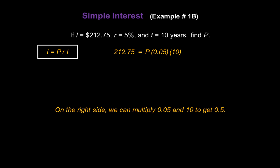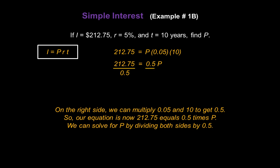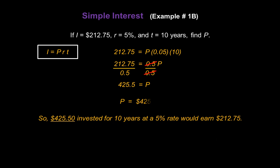On the right side, we can multiply 0.05 and 10 together, which gives us 0.5. So our equation is now 212.75 equals 0.5P. We can solve for P by dividing both sides of our equation by 0.5. On the left, 212.75 divided by 0.5 is 425.5. And on the right, 0.5 divided by 0.5 cancels out, leaving us with just P. So a principal amount of $425.50 invested for 10 years at a rate of 5% would earn $212.75.